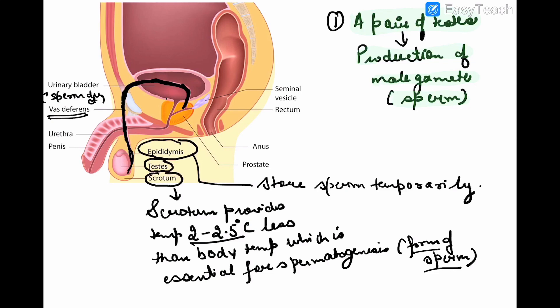Testes lie in a sac-like structure called the scrotum. The scrotum provides a temperature 2 to 2.5 degrees less than the body temperature, and this lower temperature is essential for the formation of sperm. Hence the testes lie inside the scrotum.